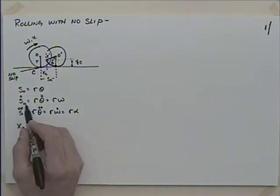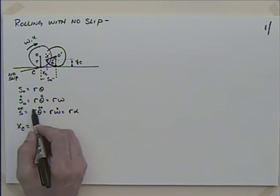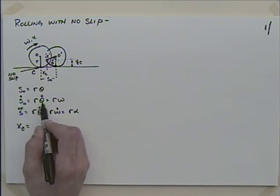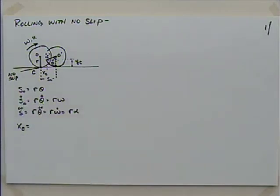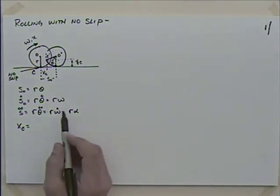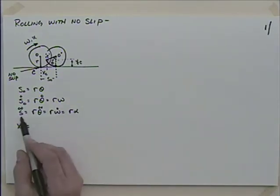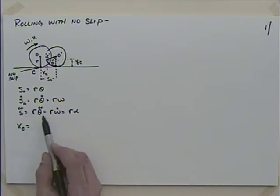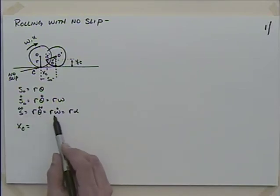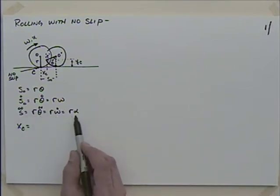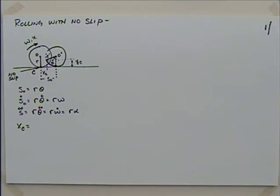If I differentiate S_naught, I get that the derivative of S_naught with respect to time is R times theta-dot, R being constant, which equals R*omega. If I differentiate again, S double-dot - the acceleration - would be R*theta-double-dot, or R*omega-dot, or R*alpha: the radius times the angular acceleration.